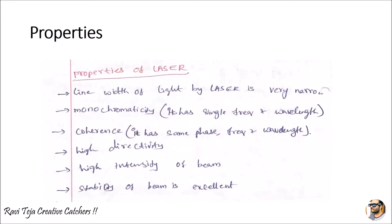Based on the application, different types of lasers exist. Once the laser light is projected into free air, it operates on a single frequency as well as single wavelength. A third property is coherence — it has the same phase, frequency, and wavelength. It also has high directivity and high intensity of beam, and the stability of the beam is also excellent.